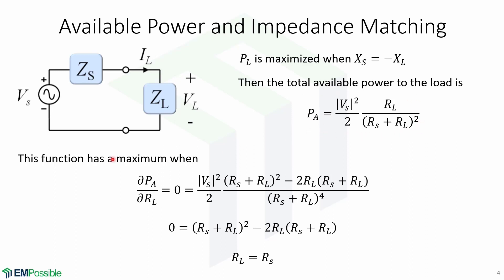This function has a maximum when the partial of Pa with respect to RL equals zero. We take the derivative and we obtain this expression. We can then solve for RL and we find that RL, the resistance of the load, equals the resistance of the source.